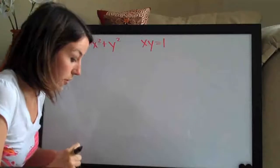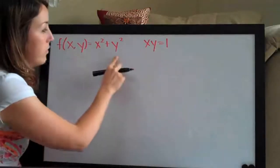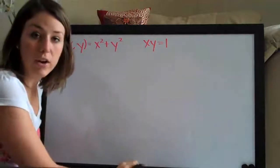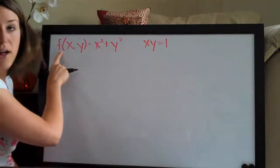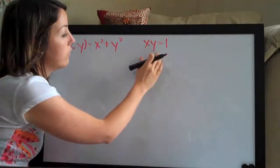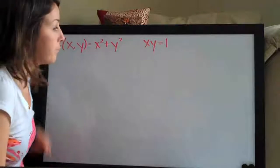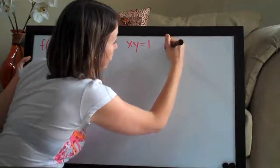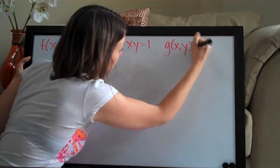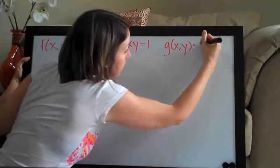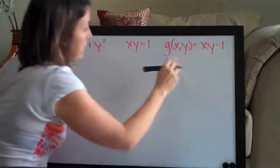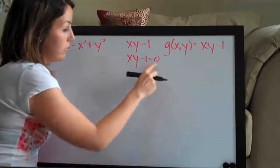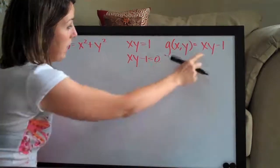The first thing we always want to do is convert the constraint equation. We have f equals a function and over here we just have an equation. We want to change this so that we call the constraint equation g instead of f. So g equals something — we do that by subtracting 1 from both sides, giving us g equals xy minus 1, or xy minus 1 equals 0.